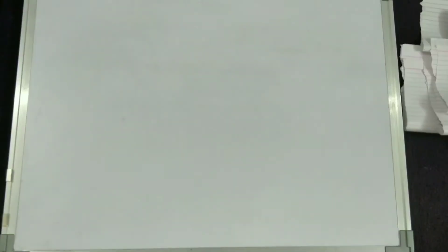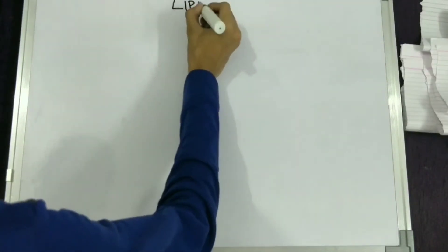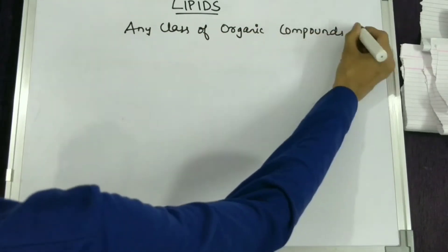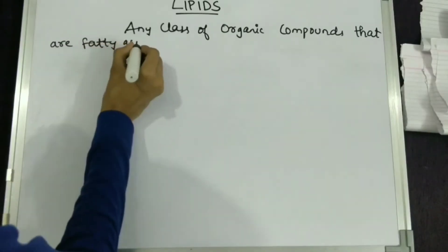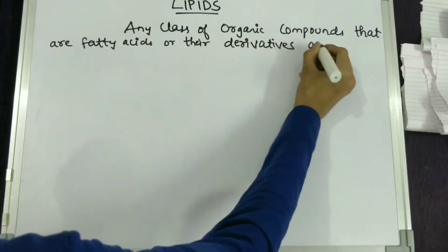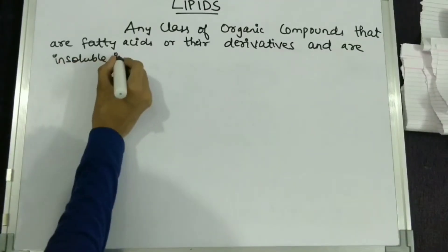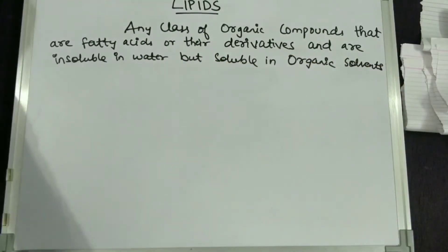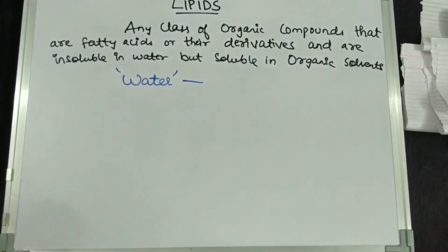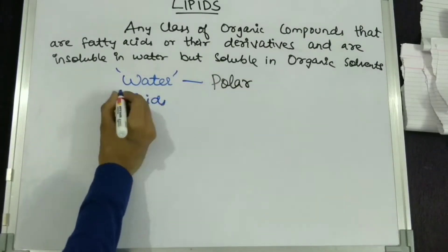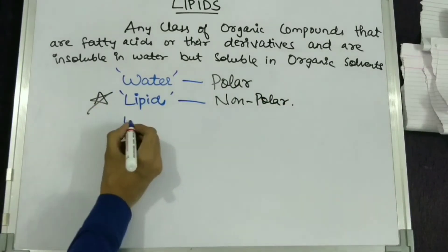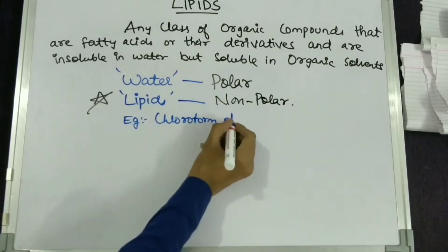Starting with the definition: lipids are any class of organic compounds that are fatty acids or their derivatives, and are insoluble in water and soluble in other organic solvents. As we know, water is a polar compound and lipids are soluble in organic solvents that are non-polar in nature. An example of an organic solvent is chloroform.